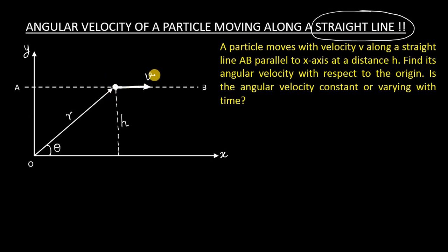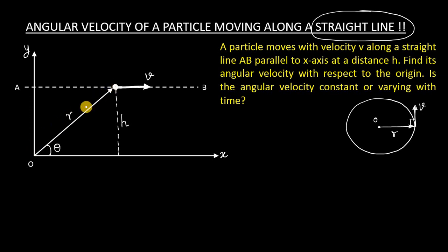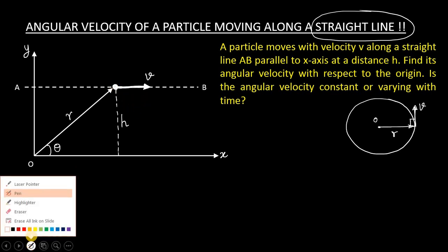The main problem is the particle does not move in a circle — how can we have angular velocity? Let us first understand the basic meaning of angular velocity in a circle. Let O be the center and r be the radius vector. The velocity is perpendicular to the radius vector. So here too, we can find the component of velocity perpendicular to the radius vector r measured from the origin, and use that to find the angular velocity.